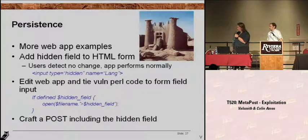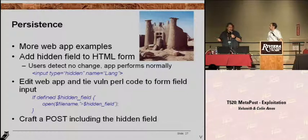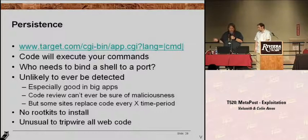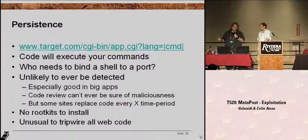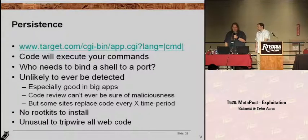Here's a more concrete real-world example — we're going to show a demo. Basically, adding an extra field into a form with a little bit of extra code that processes it that does not look malicious, but the code has a vulnerability. When you're adding vulnerable code to a web app, you can add things that will execute your commands just like as if they had coded it insecurely themselves. Who needs to add a shell bound to a port, which is going to be noisy and detectable? It's unlikely to ever detect these kind of things, especially in big apps with thousands of lines of code. And one good thing is they can never be sure of the maliciousness of these bugs.